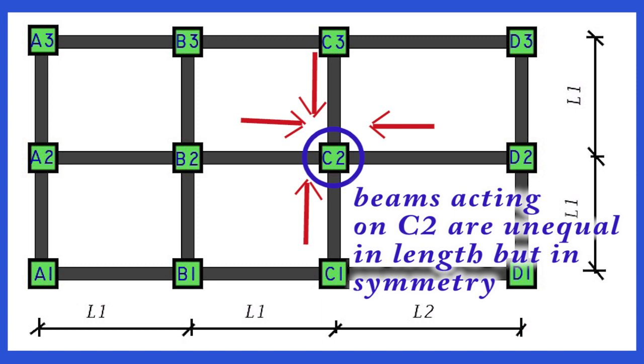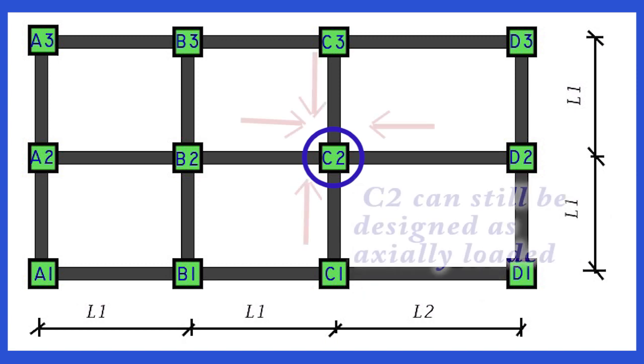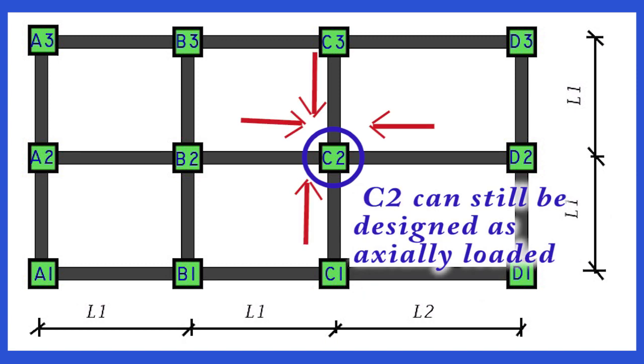However, provided that one, the loadings on the beams are uniformly distributed, and two, the beam spans do not differ by more than 15% of the longer, the moment will be small.